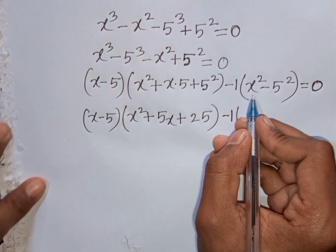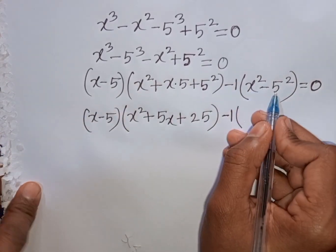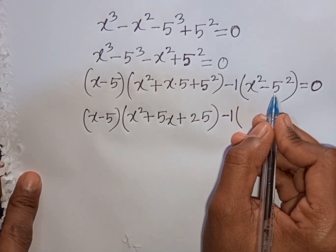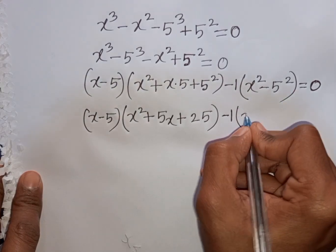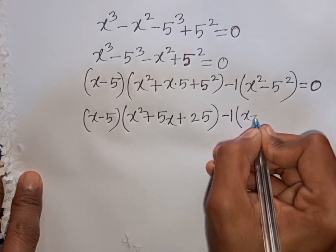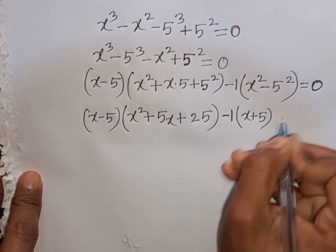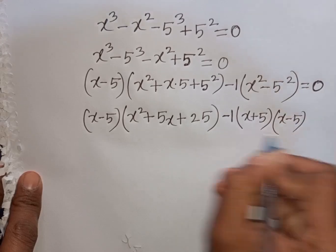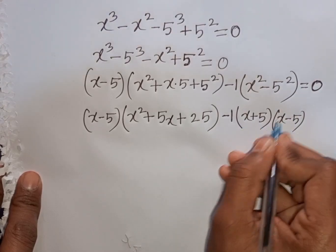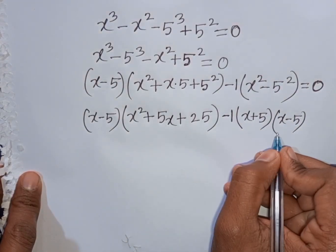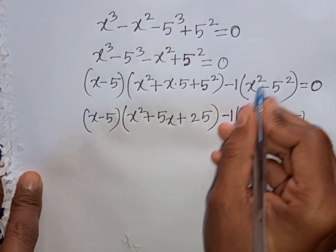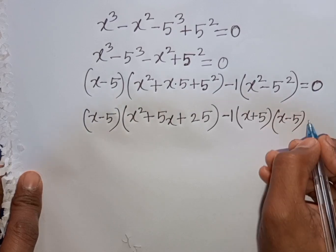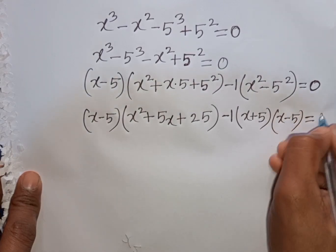Then minus 1 times — here I can apply the formula of a square minus b square. Again, a is x, b is 5. So according to the formula I can write here: x plus 5 times x minus 5. That means a plus b times a minus b — so this is the formula of a square minus b square. Then is equal to 0.